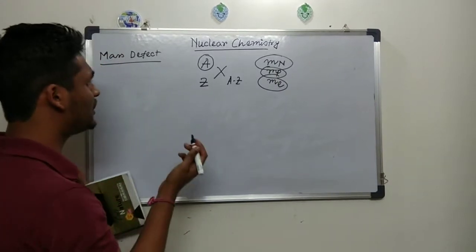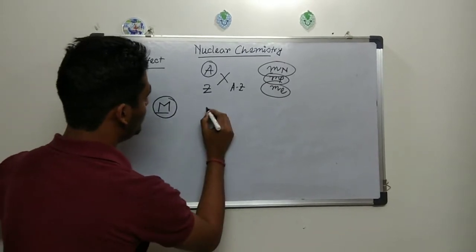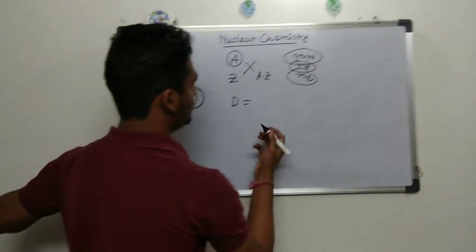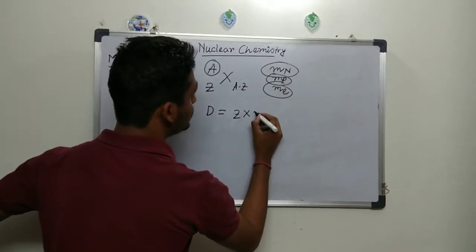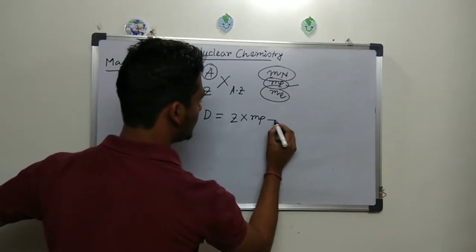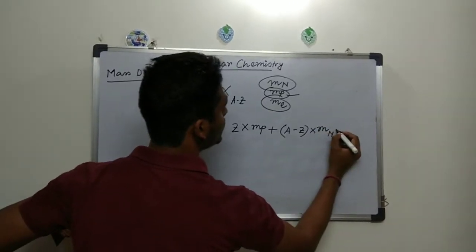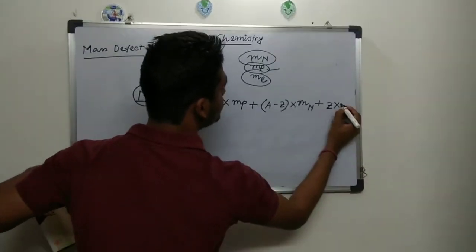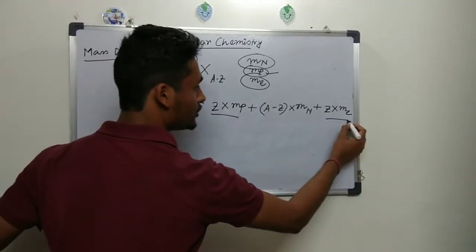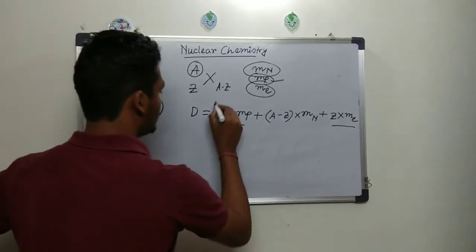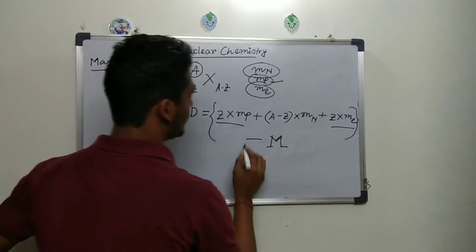So what is mass defect? If M is the actual mass from measurement, the mass defect Δm is the total calculated mass minus M. The total mass is: Z times mp (mass of proton) plus (A minus Z) times mn (mass of neutron) plus Z times me (mass of electron). The number of electrons equals the number of protons, which is Z.